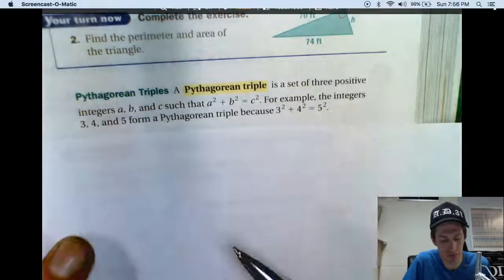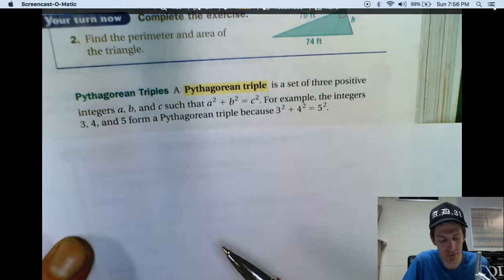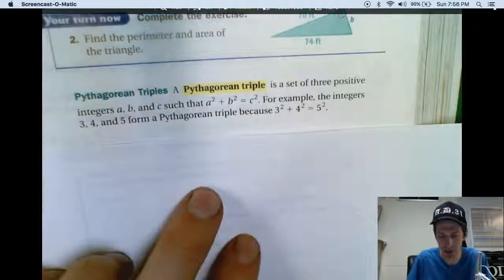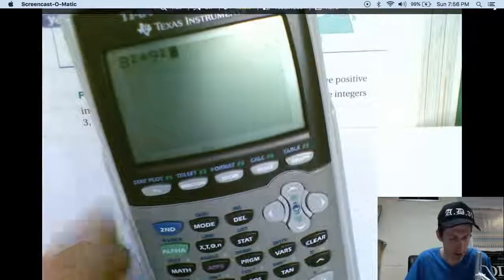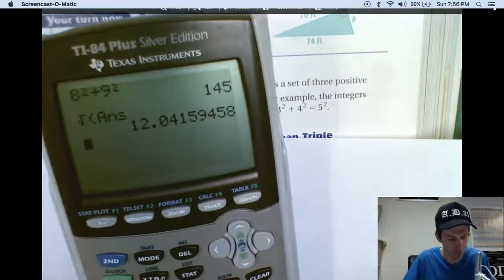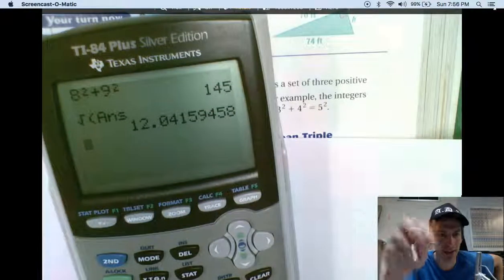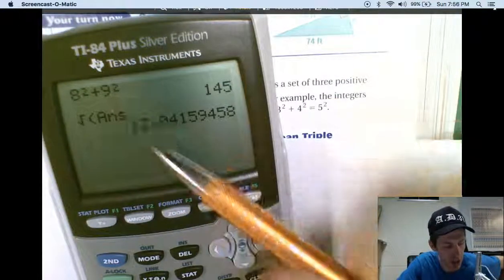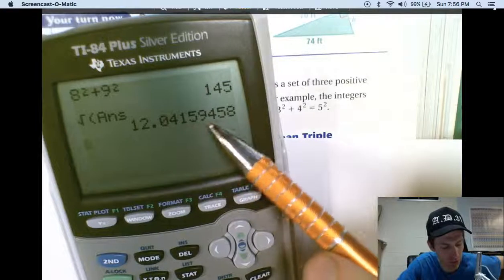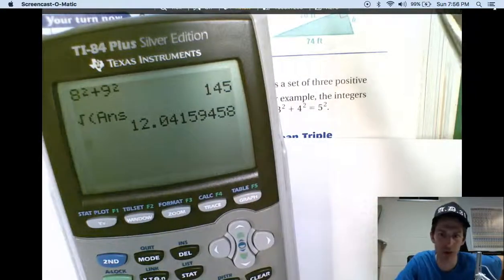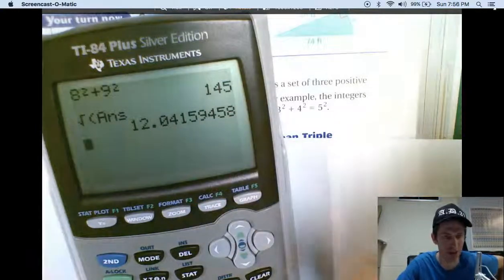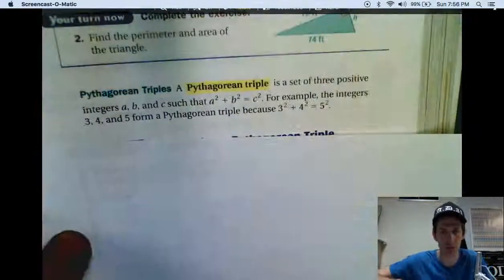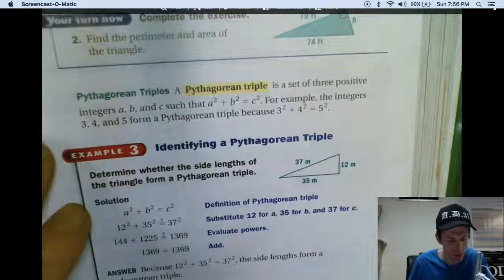Well, there's other ones. But, what I didn't tell you yesterday, is that a Pythagorean triple has to be positive integers. 3, 4, and 5 are all integers. You can't do, like I just did 8, 9, and the square root of 145 is that. You cannot say 8, 9, and 12.04159458 are a Pythagorean triple. No. All three have to be integers. Whole numbers. No decimals allowed.